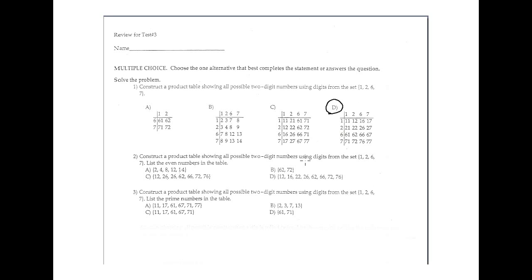Number 2: Control the product table showing all possible 2-digit numbers using the digit set {1, 2, 6, 7}, and list the even numbers in the table. They want the even numbers in the table.